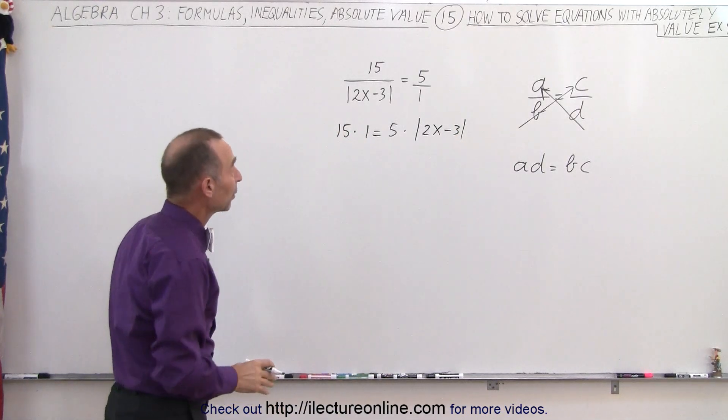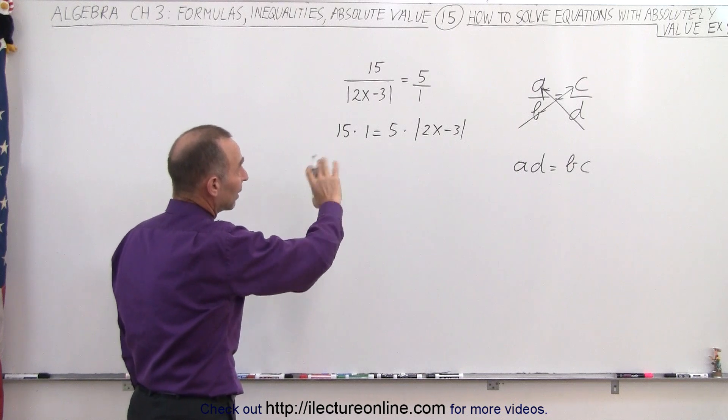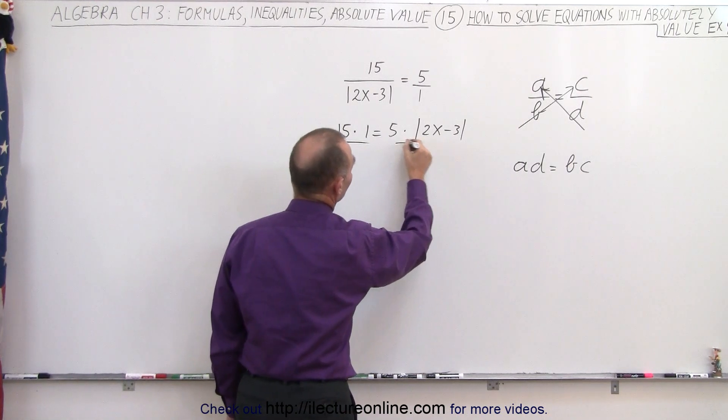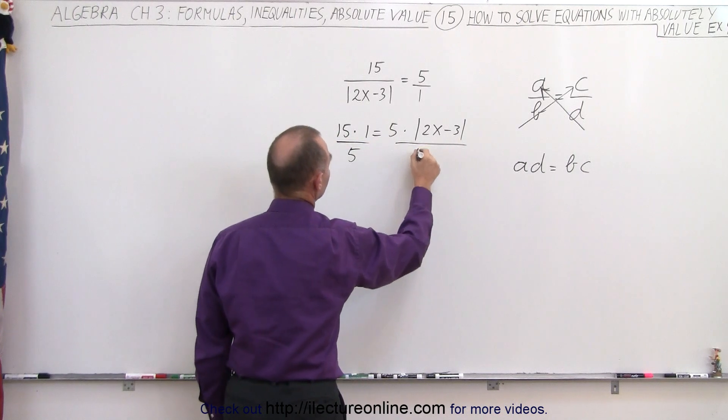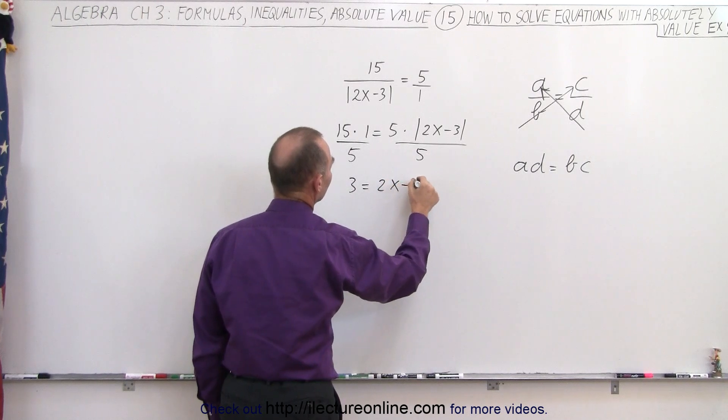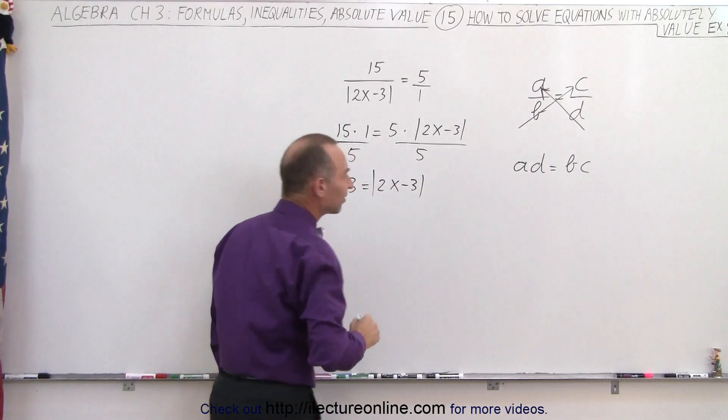Then the next thing we want to do is get rid of the 5 on the right side, because we want to isolate the absolute value sign. So we're going to divide both sides by 5, and we end up with 3 is equal to 2x minus 3 inside the absolute value sign.